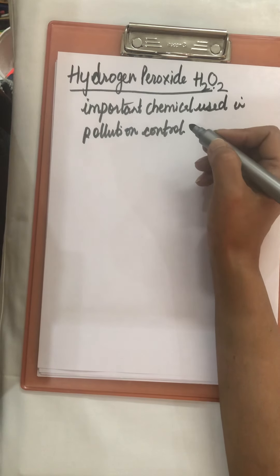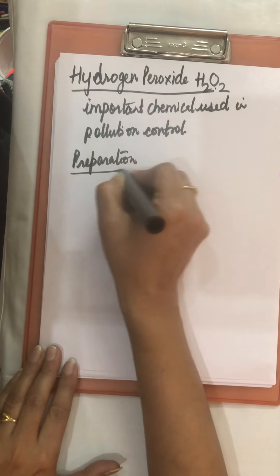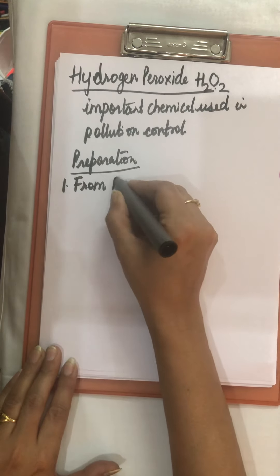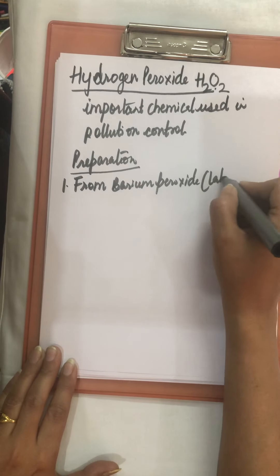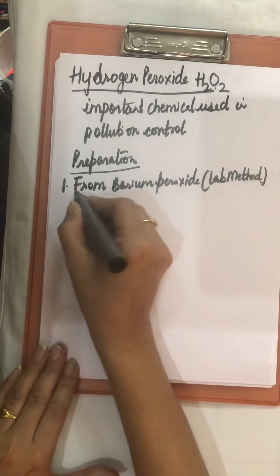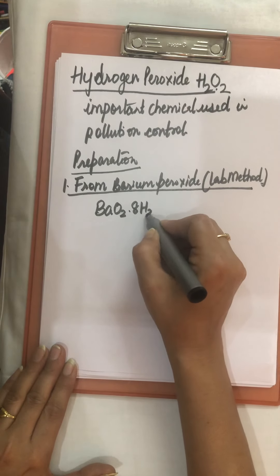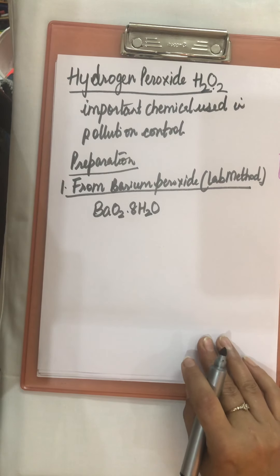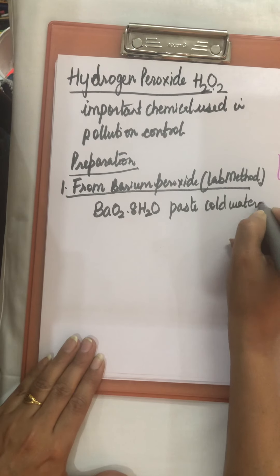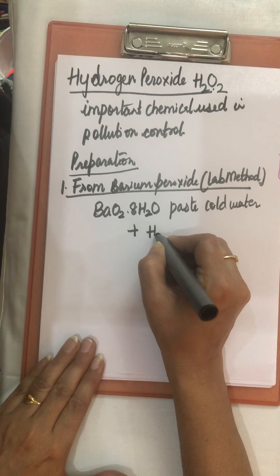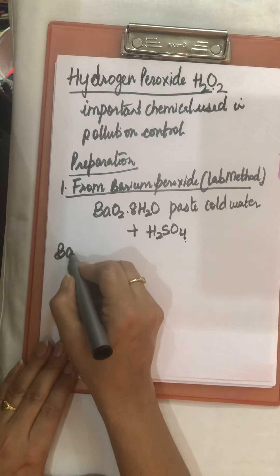Preparation of hydrogen peroxide: the first method is from barium peroxide. This is a laboratory method. For this purpose, we take hydrated barium peroxide, which is BaO₂·8H₂O, and make its paste in ice cold water to form a thick paste. Then to that paste, we slowly add 20% sulfuric acid.